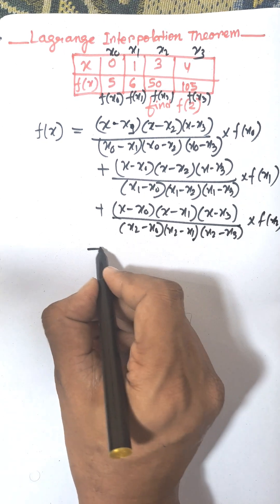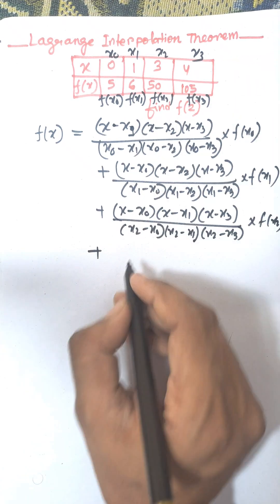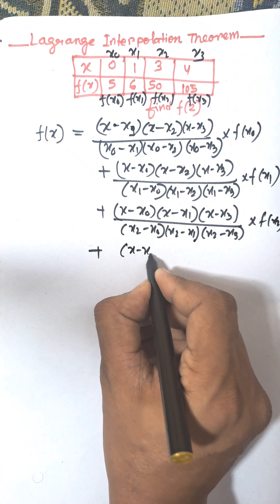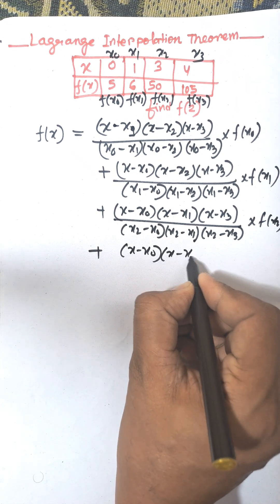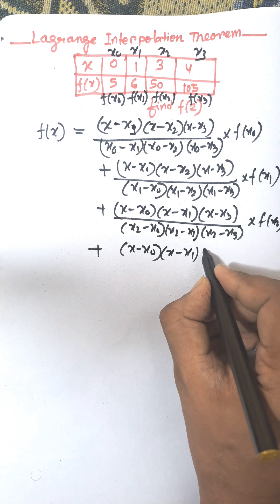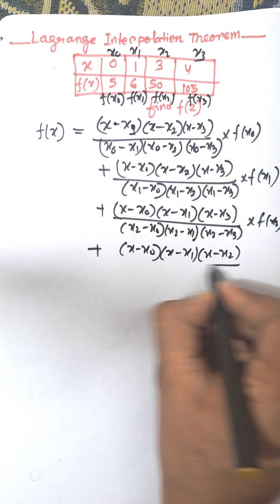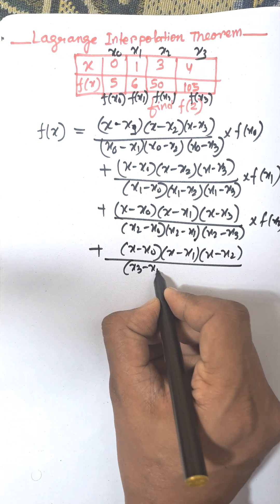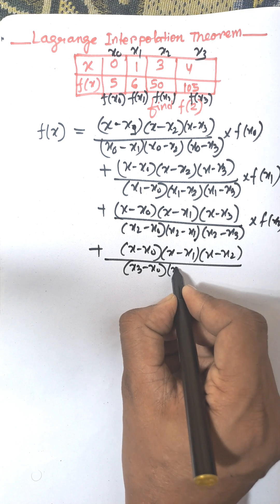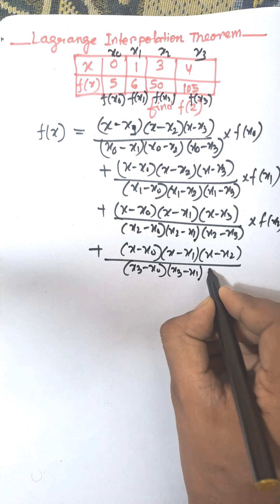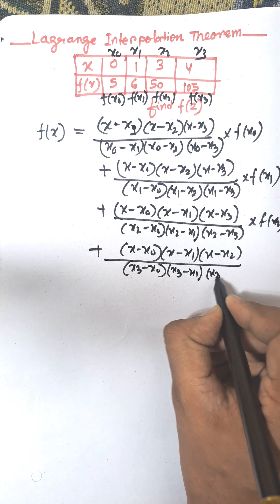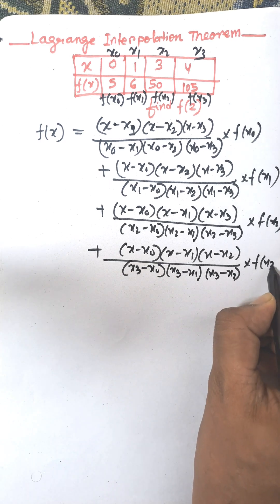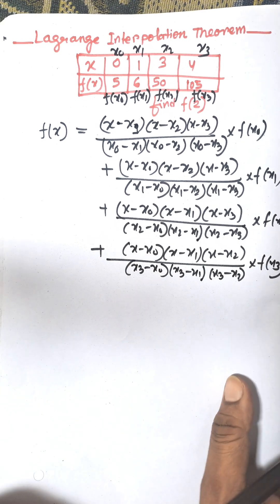Finally, when you remove x3, the formula will be x minus x0, x minus x1, x minus x2, divided by x3 minus x0, x3 minus x1, x3 minus x2, into f(x3). So this is the complete formula for f(x).